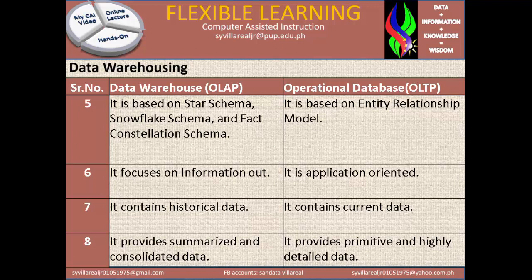Number 6: Under Data Warehouse OLAP it focuses on information out, as mentioned in Number 4, while Operational Database is application-oriented — it needs to be created by programmers who build a system and a database system to make it application-oriented. Number 7: Data Warehouse contains historical data because they are going to analyze the data under its history, while Operational Database OLTP contains the current data, which is true because that is the daily transaction.